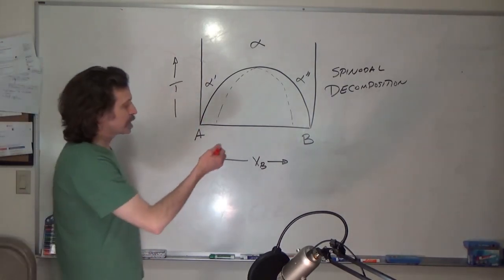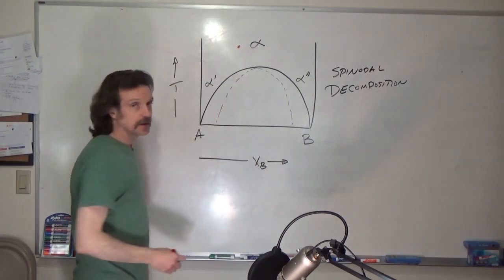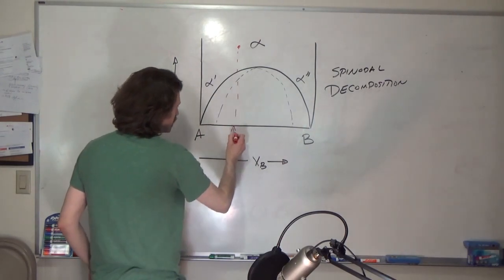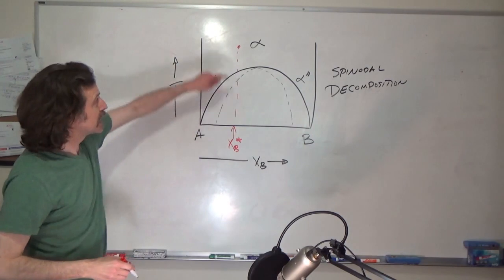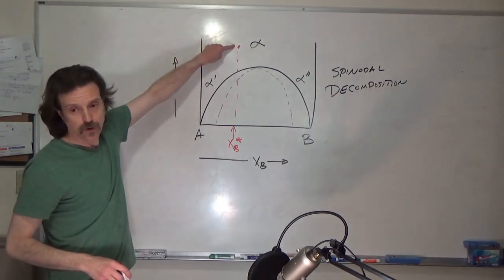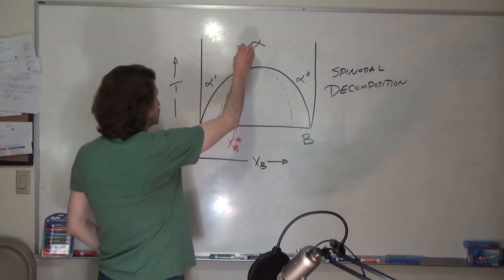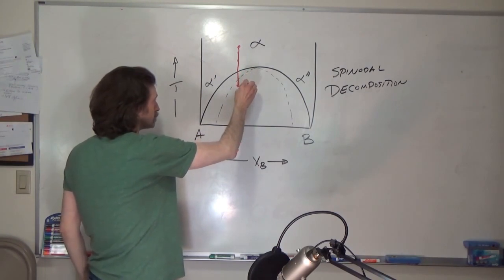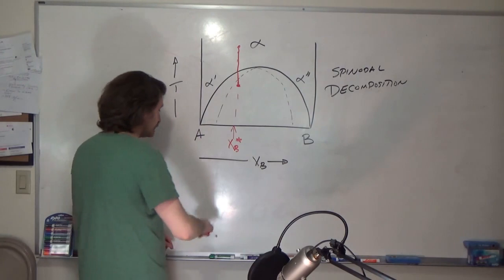So what's happening here? You're at some composition, let's call it XB star. At warm temperatures you have single phase alpha, and as you cross this phase boundary you are now in a two-phase region.